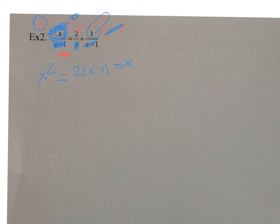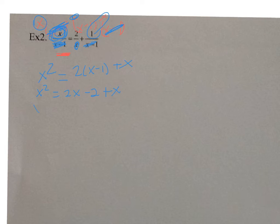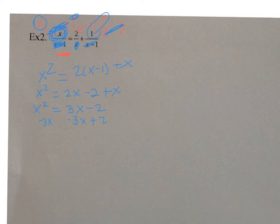So I'm going to distribute the 2. I have x squared equals 2x minus 2 plus x. Combine like terms - the 2x and x. So it's x squared equals 3x minus 2. It's quadratic, so it has to equal 0. I'm going to move everything over to the left - minus 3x, add 2. So I get x squared minus 3x plus 2 is equal to 0.